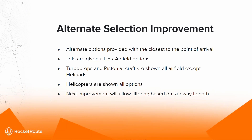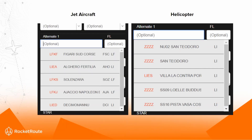Another small but great improvement is the Alternate Selection. Alternate options are now provided closest to the point of arrival. Jet aircraft are shown all IFR airfield options; turboprops and piston aircraft are shown all airfields except helipads; helicopters are shown all available options. A further improvement is coming that will allow filtering based on runway length, so operators with larger aircraft can filter results to their requirements. For the same airfield, a jet operator and a helicopter operator will see different sets of alternates.